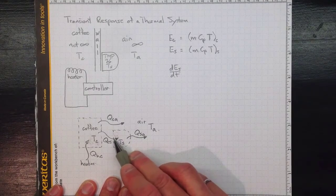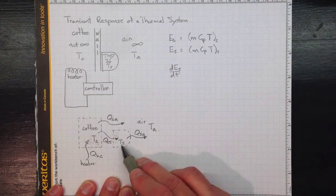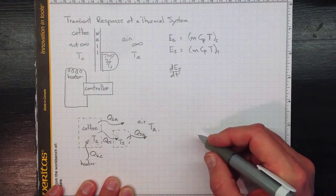So if there's more going out than coming in, the derivative will be negative. If there's more coming in than is going out, the derivative will be positive. The energy will go up and correspondingly the temperature will go up.